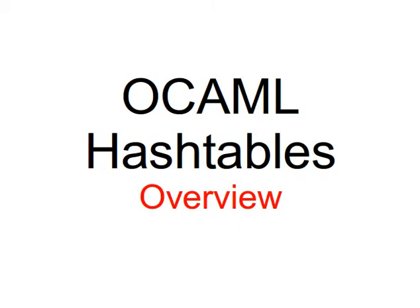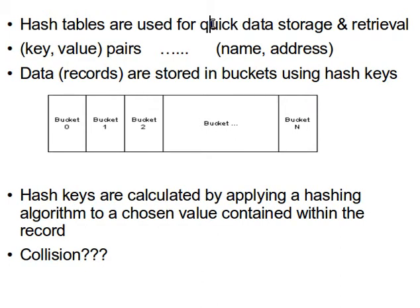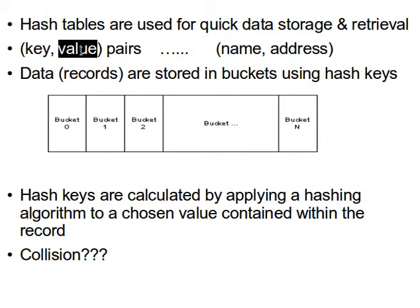Welcome. This time we're going to learn hash tables in OCaml. I'll assume you're familiar with hash tables but I'll give a quick overview. Hash tables are used for quick data storage and retrieval. They look like a list of key-value pairs. You can think of it like an array, except arrays have a fixed size whereas hash tables can grow dynamically, like linked lists. The idea is: we have a key and a value.